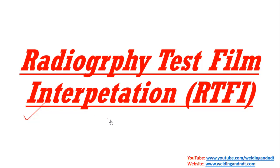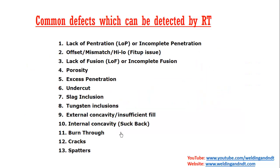This is Part 2 of our RTFI video. I have already made Part 1 where I explained some defects. In Part 1 I had explained how to identify lack of penetration, offset, lack of fusion, porosity, and excess penetration — those 5 defects were covered in Part 1.